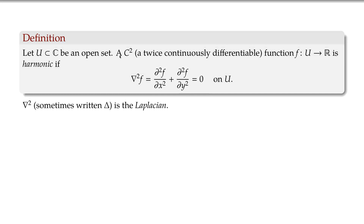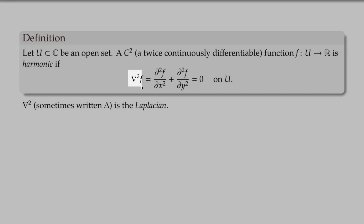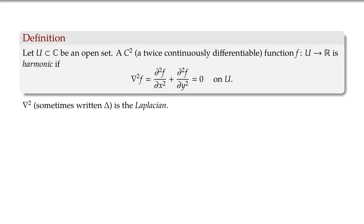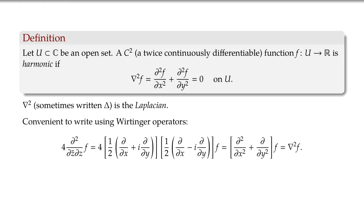We write this operator as ∇². Sometimes it's also written as Δ and called the Laplacian, but we don't write it as Δ because we use delta for something else — that's why I'm using ∇², which also nicely tells you it's a second-order operator. It's convenient to write down this operator using the derivatives in terms of z and z̄.